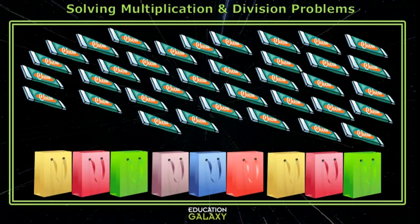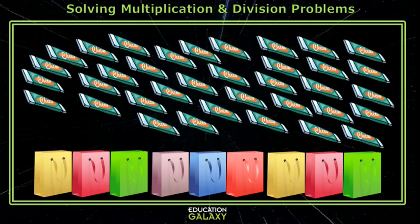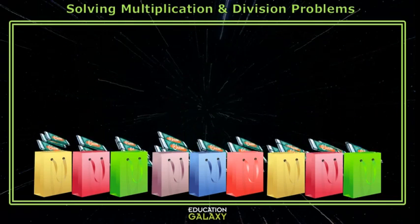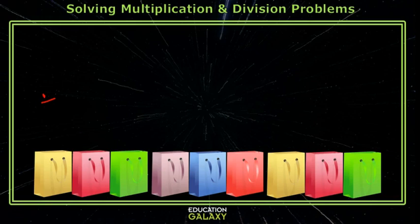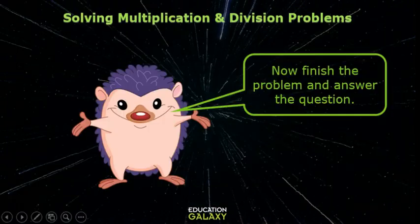Once you know the total, you start putting gum in the bag. You put one piece in each bag, kind of like dealing cards, and then you repeat the process until all the gum is gone. This is a division action, so you take the total number of pieces of gum and divide by the nine bags.